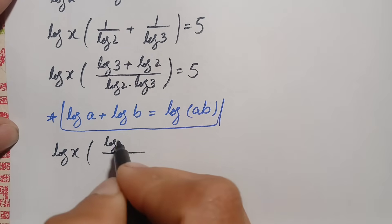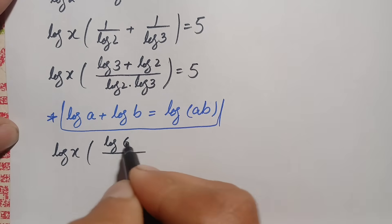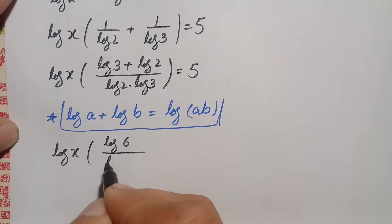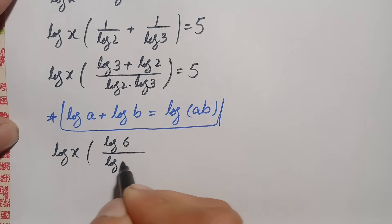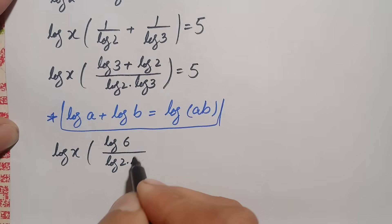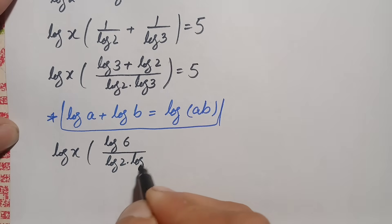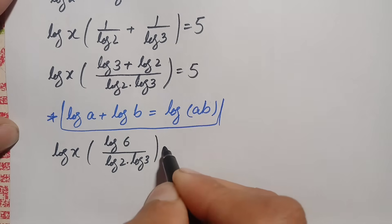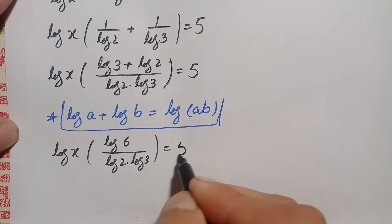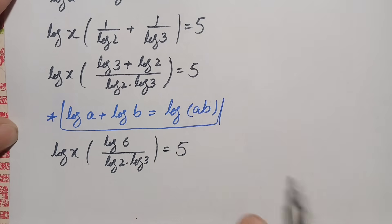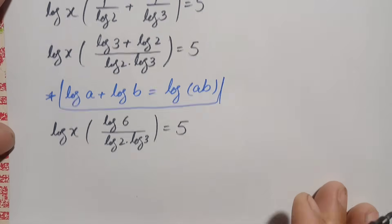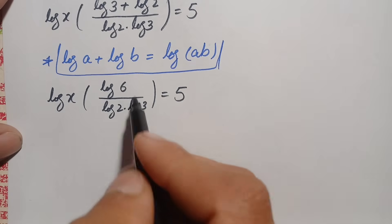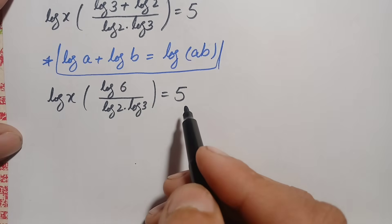Since log of 3 plus log of 2 equals log of 6, this becomes log of x times log of 6, divided by (log of 2 times log of 3), is equal to 5.